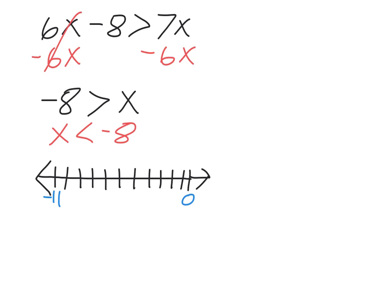And we need to know, do we put a circle or a dot? So, there's no line underneath this, so that means it's not equal to. So we will put a circle at negative 8. And then, it's less than, so we shade to the left.